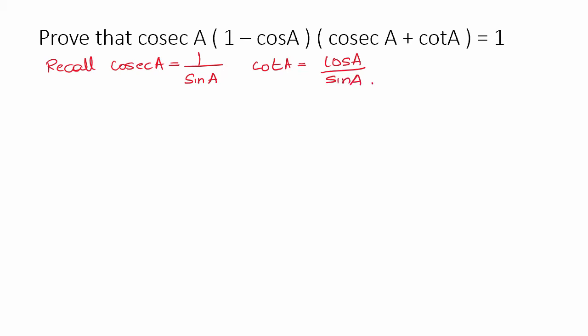These two definitions are very important to remember. Once you remember these definitions, we can solve. Let us write down the problem: cosecant A minus cos A, multiplied by cosecant A plus cot A.